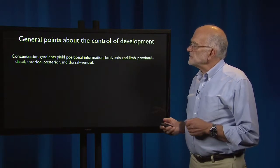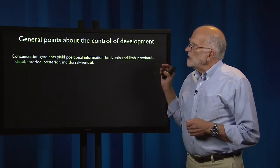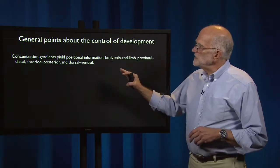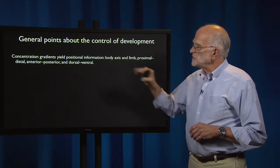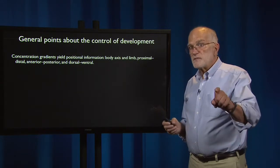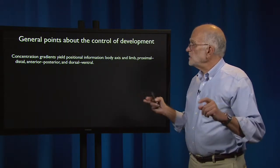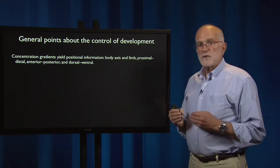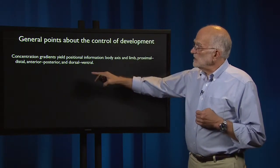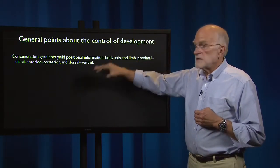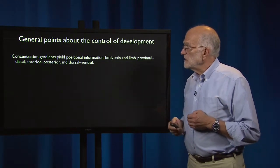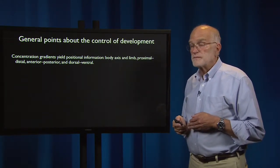A few general points. At the beginning of development, usually in the egg, a concentration gradient is giving positional information. It determines which is going to be the head and which is going to be the tail, which is going to be next to the body, which will be far away from the body, and which will be the back and which will be the stomach — anterior, posterior, and dorsal ventral.